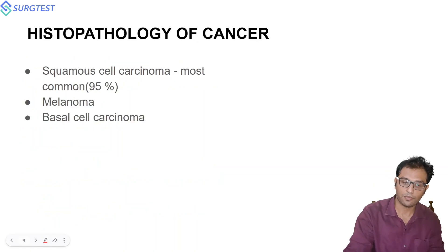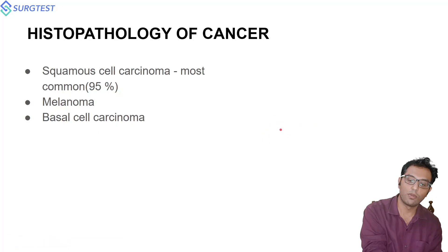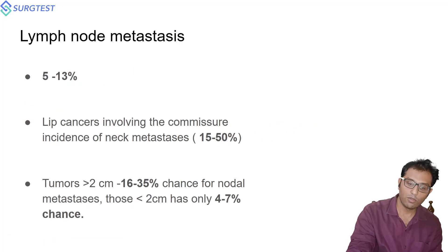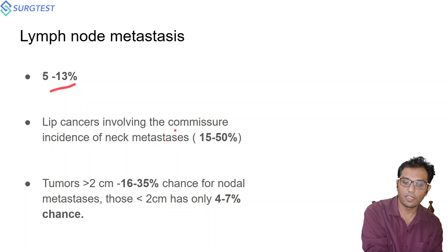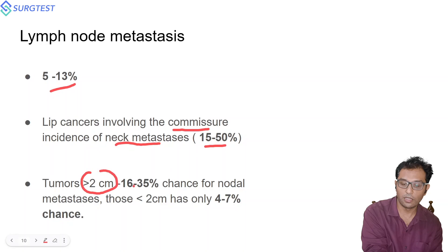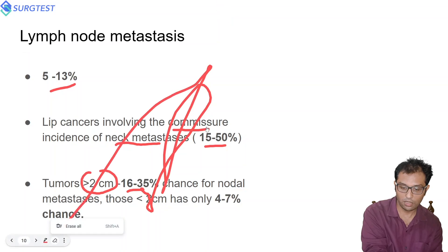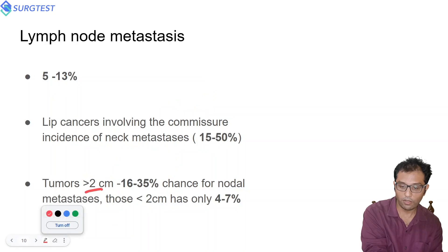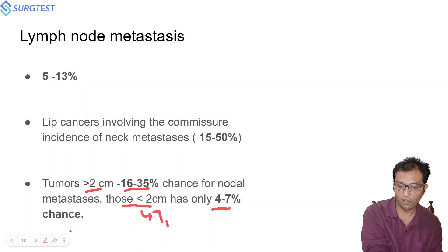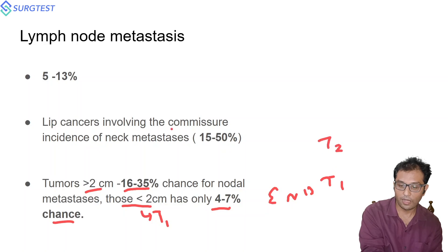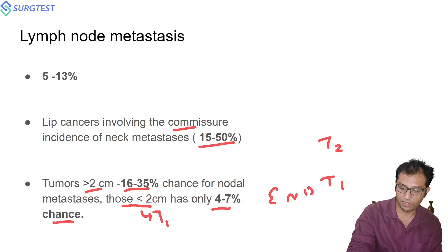The etiology is cumulative and prolonged exposure to UV radiation from sunlight. Patients with light skin complexions have less melanin and thus less protection from UV radiation, making them more prone to lip cancers. The most common histopathological variant is squamous cell carcinoma, followed by melanoma and basal cell carcinoma. Overall incidence of lymph node mets is 5 to 30 percent. When the commission is involved, incidence of neck mets is around 50 percent. For tumors more than 2 cm, neck mets incidence is 30 to 35 percent. For T1 tumors less than 2 cm, neck mets incidence is only 4 to 7 percent, so there is no role for elective neck dissection in T1; it can be considered from T2 onwards.